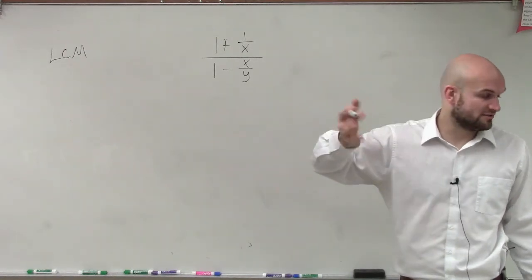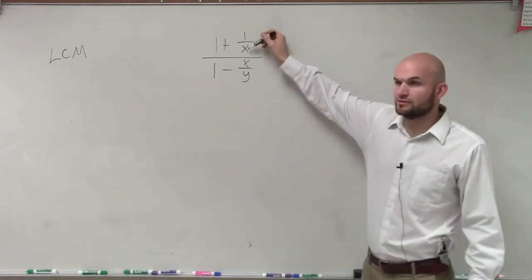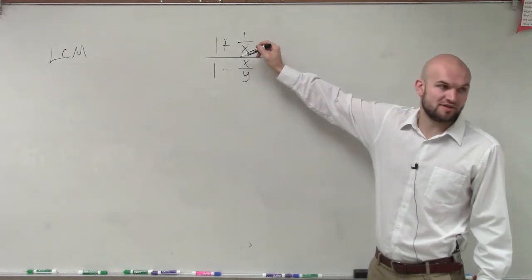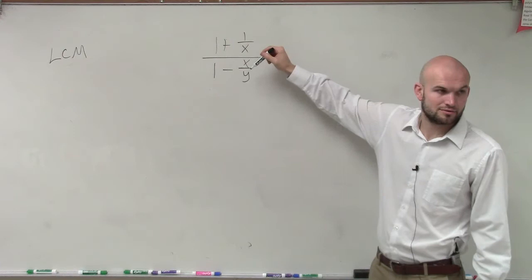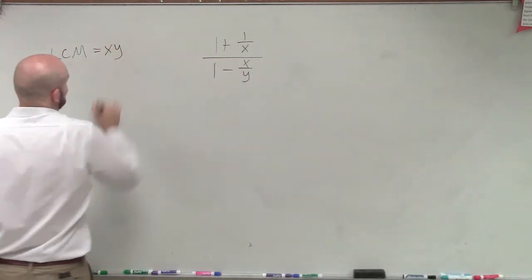Well, we know 1 is going to divide into, but 1 also divides into everything. What other variables? What about x? So what's the smallest value of x that x needs to divide into? X. What about y? Y. So our LCM is just equal to x times y.